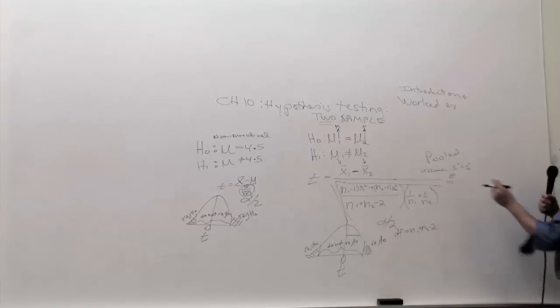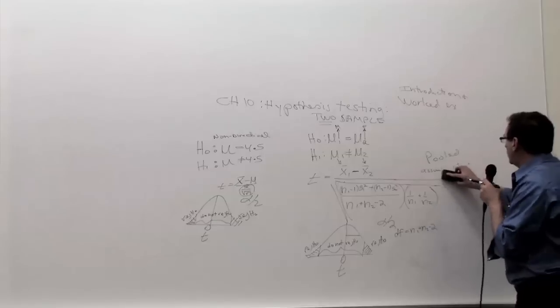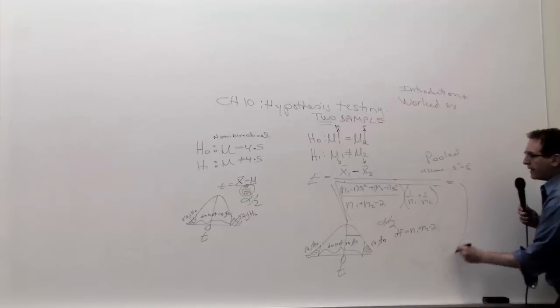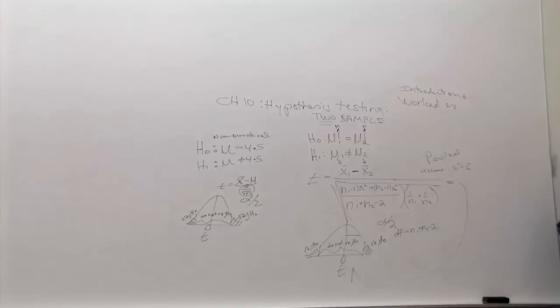And finally, when you get your calculation, which again, easier said than done, you're going to make an arrow just like in chapter 9 and decide to accept or reject. If you accept, that means you're proving the two groups are the same. If you reject, it proves the two groups are different. You accept or reject.